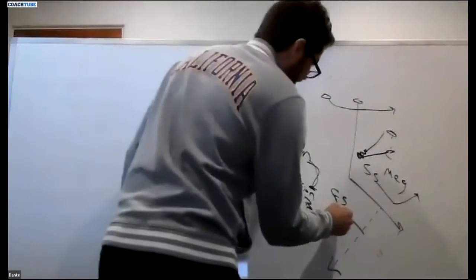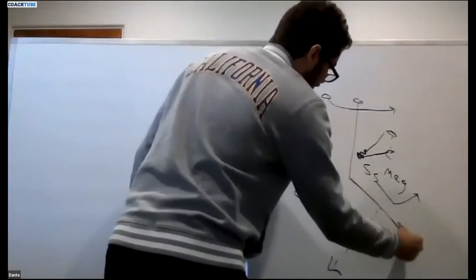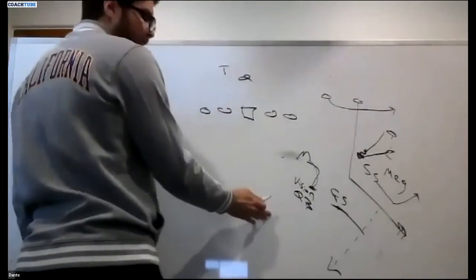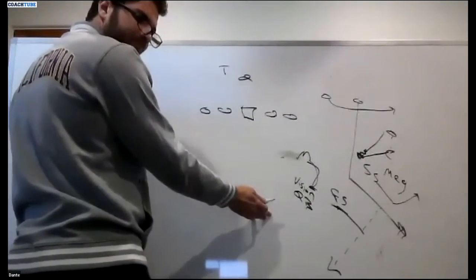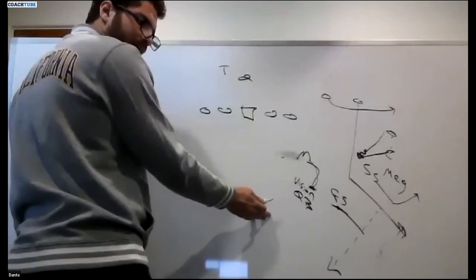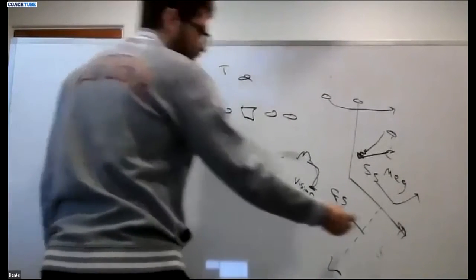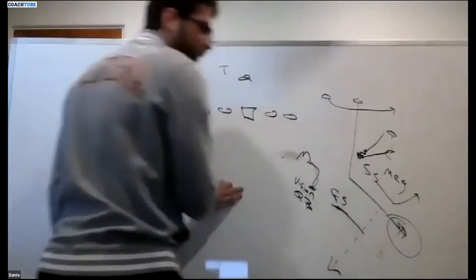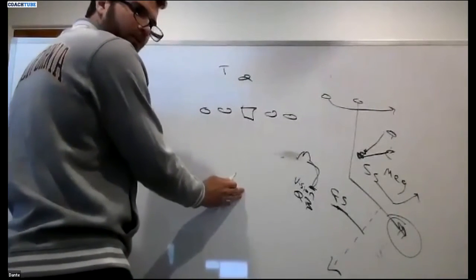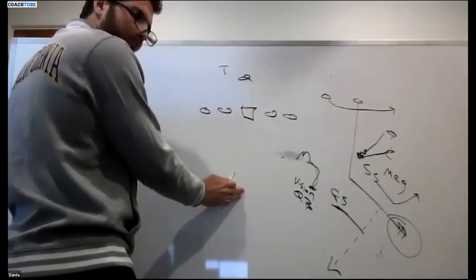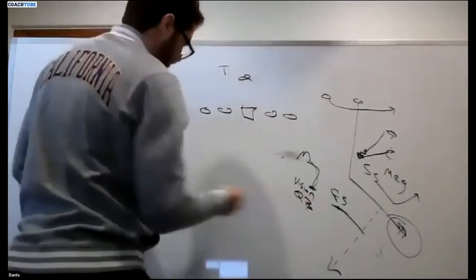So that means the free safety has to play further away from the number two receiver so he can play inside and on top. If they can catch it and throw it, they're going to complete the corner route every single time because they're running away from you and you've got to protect against the bang eight.